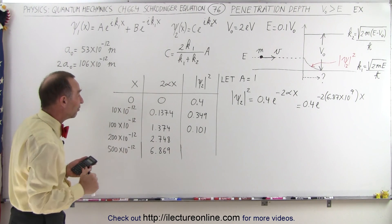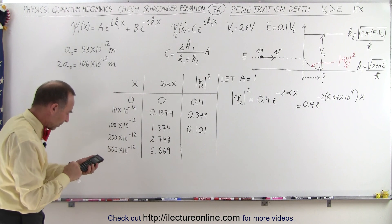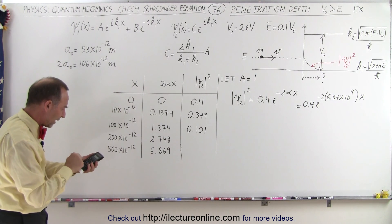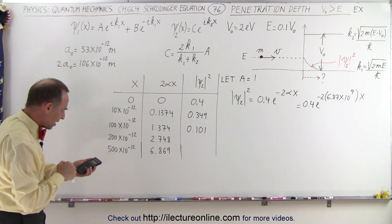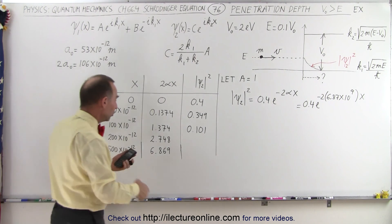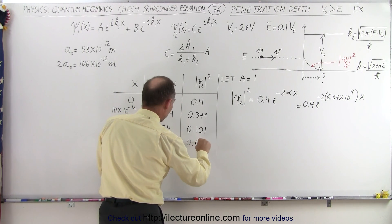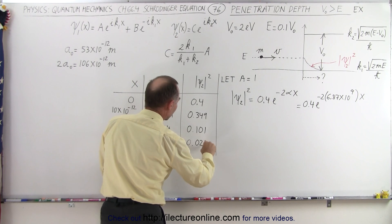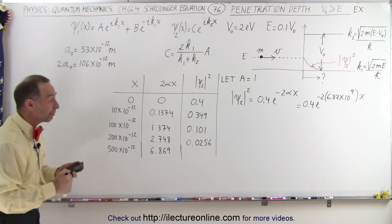So now let's go to two atom diameters, 2.748. Put a negative in front of that, make that the exponent of e, and multiply times 0.4. Now we're down to 0.0256. So now notice there's not as much probability for the particle to make it two atom diameters.